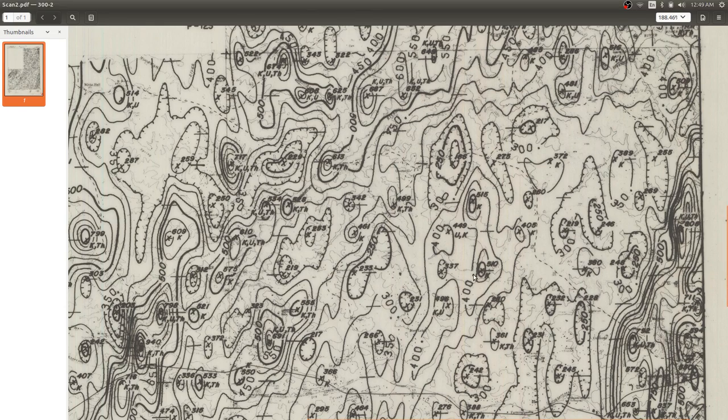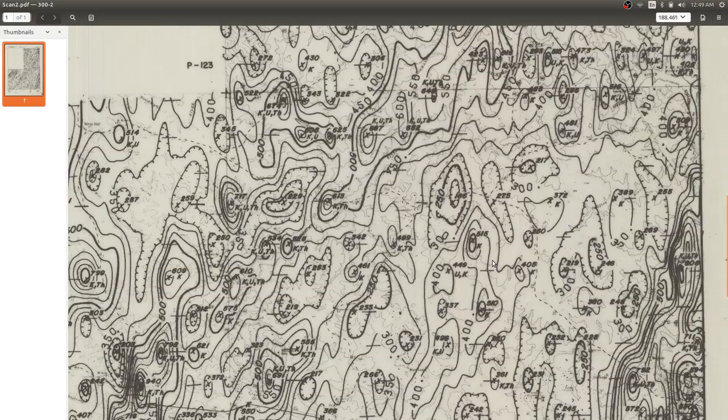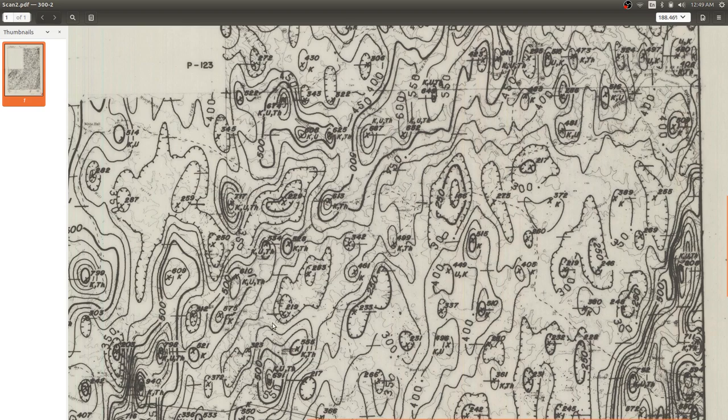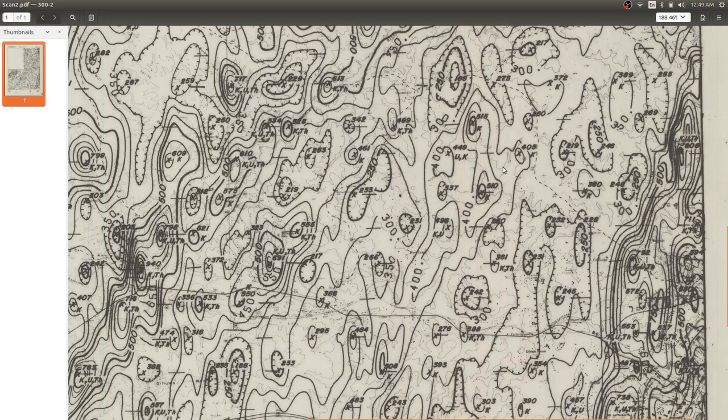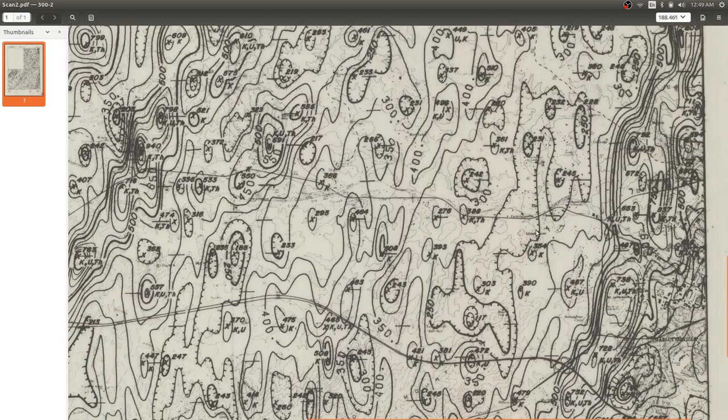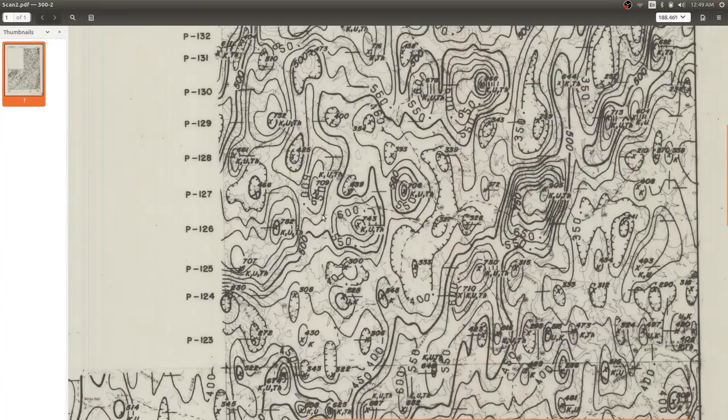But in any case, it'd be really interesting to overlay my data with these aerial surveys and kind of see how they compare. That's something I plan on working on next. That's probably the next thing I'm going to try to implement is some way of comparing the two to see if areas of high radiation on this map correspond to areas that I've seen.